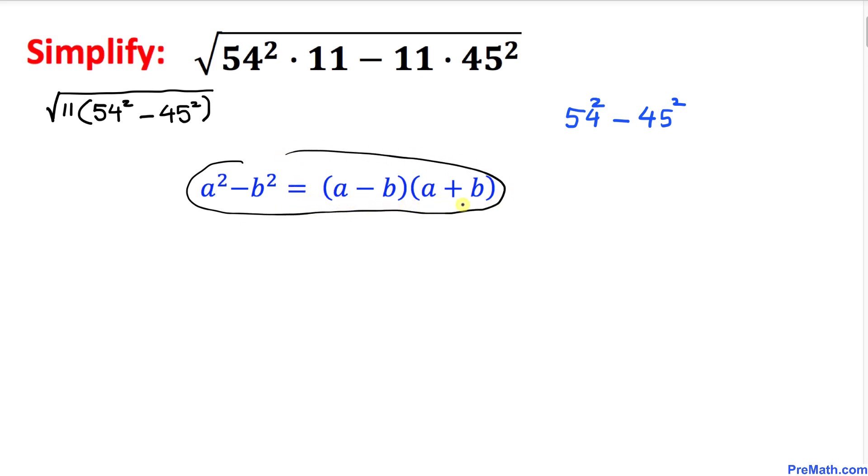So in our case, 54 is our a and 45 is our b. So this could be written as simply 54 minus 45 times 54 plus 45, so far so good.